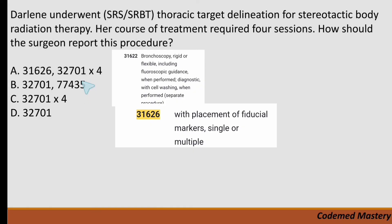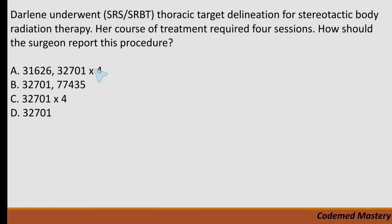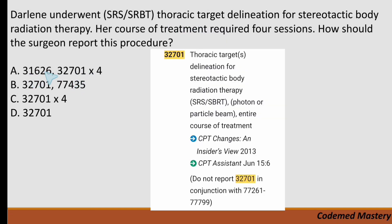Option A also includes 32701 — thoracic target delineation for stereotactic body radiation therapy — which is mentioned in our question. However, 31626 is not required here, and we should not multiply code 32701. So we eliminate option A.